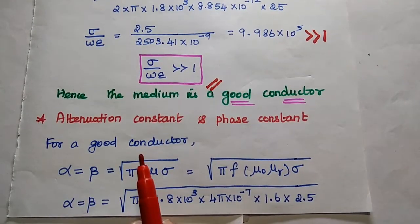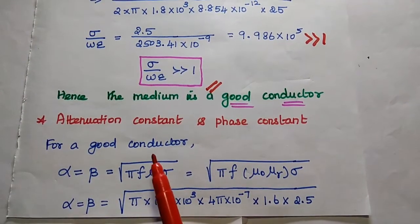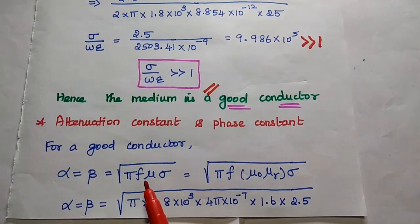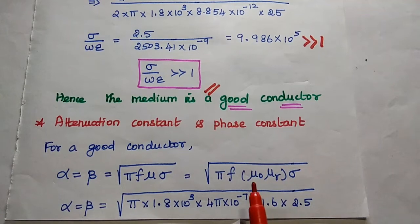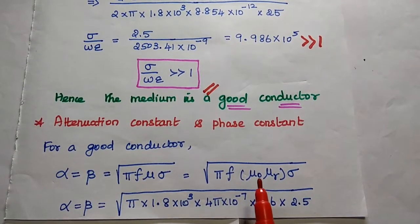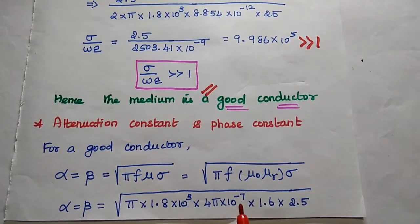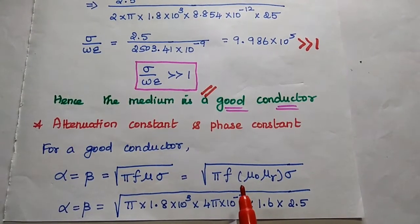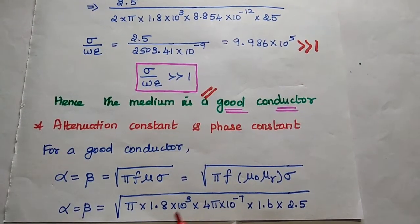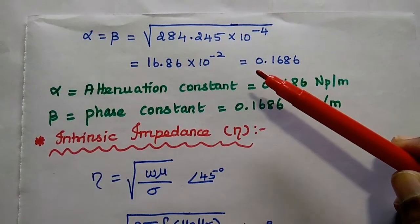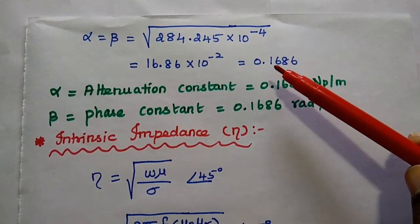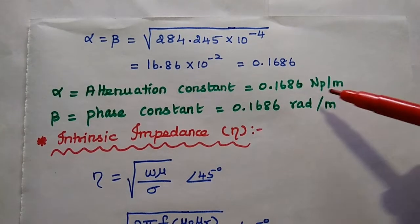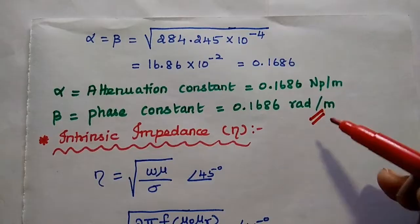First, we find the attenuation constant and phase constant. For a good conductor, alpha equals beta equals square root of pi f mu sigma, where mu equals mu naught times mu r. Substituting mu naught equal to 4 pi into 10 to the power minus 7, mu r equal to 1.6, sigma equal to 2.5, and f equal to 1.8 into 10 to the power 3, we get alpha equal to beta equal to 0.1686 — with unit neper per meter for attenuation constant and radian per meter for phase constant.